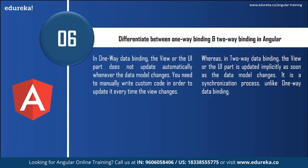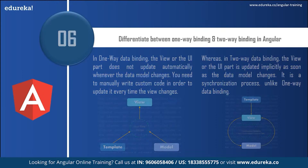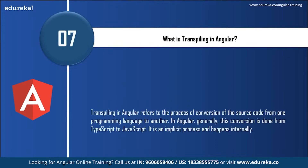Next: differentiate between one-way binding and two-way binding in Angular. In one-way binding, the view or UI part does not update automatically whenever the data model changes — you need to manually write custom code to update it every time the view changes. Whereas in two-way data binding, the view or user interface is updated implicitly as soon as the data model changes. It is a synchronization process, unlike one-way data binding. Describing this with a diagram impresses the interviewer even better.